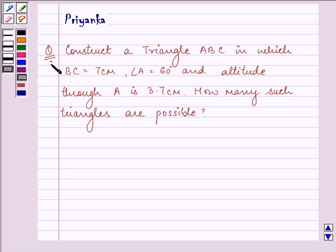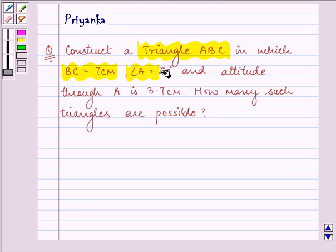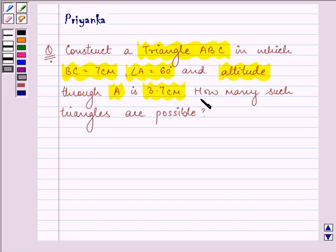Hello friends, how are you all today? The question says construct a triangle ABC in which BC is equal to 7 cm, angle A is equal to 60 degrees, and altitude through A is 3.7 cm. How many such triangles are possible?